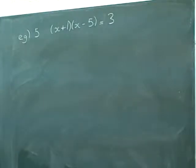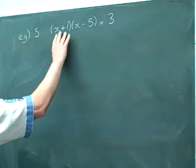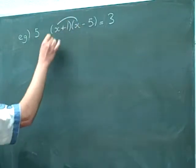Once again, it doesn't equal 0, so we're going to have to make it equal 0. Now to distribute this time, we're going to have to use FOIL.